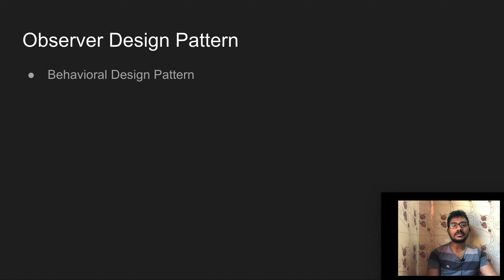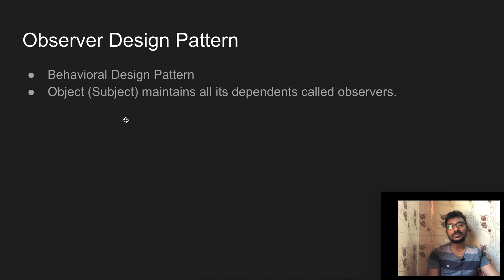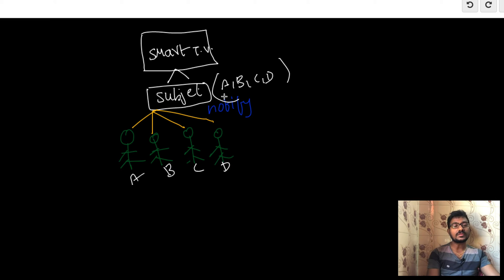We will relate these points with this example. First, Observer Design Pattern falls under behavioral design pattern, because it behaves based on some state. Second, the subject or object maintains all its dependents called observers. Here, the subject holds information about the observers, but only their IDs — not all personal information.